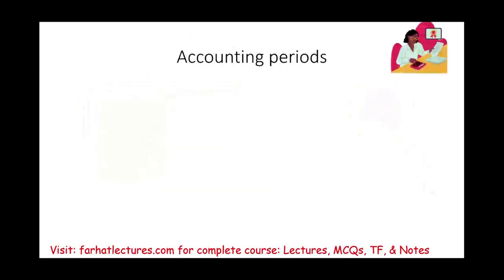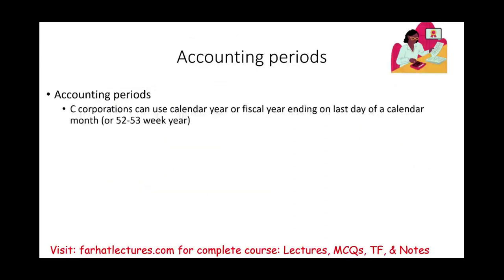Regarding accounting periods: a C corporation can use either the calendar year — January 1st through December 31st — or a fiscal year. They are flexible in this choice.